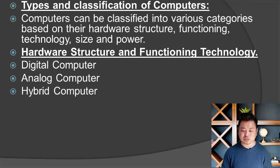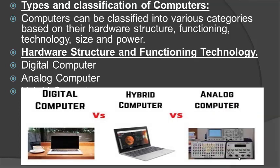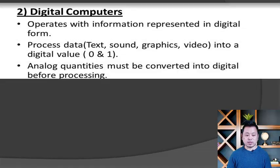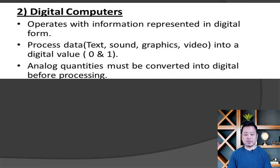Digital computers operate with information represented in digital form. Operations are represented digitally. Data such as sound, graphics, and video are all taken into digital values of 0 and 1.